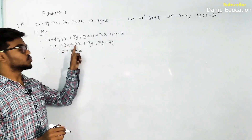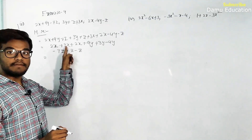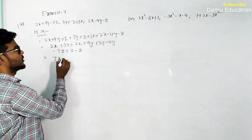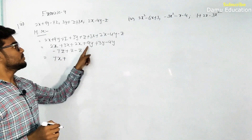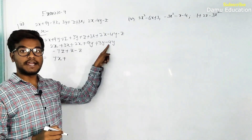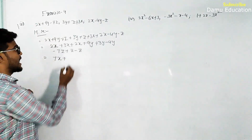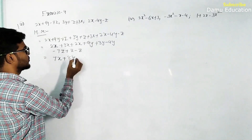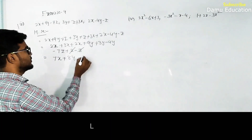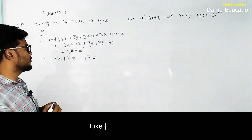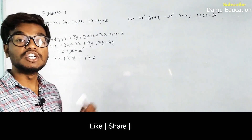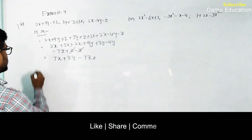For the x terms: 2x plus 3x gives 5x, plus 2x gives 7x. For y terms: 9 plus 3 is 12, minus 4 gives 8y. For z terms: plus z and minus z cancel, leaving minus 7z. So the horizontal method answer is 7x plus 8y minus 7z.